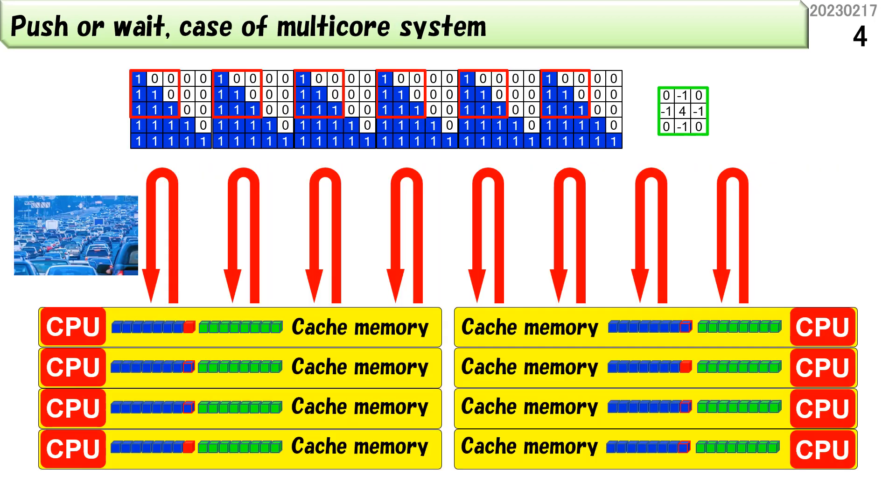Let's assume one car is one CPU. Blue data is the input image, and green data is the weight. Every CPU tries to get the missing data in cache memory, even if it's the same, and we cannot estimate when the data will arrive.